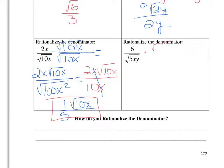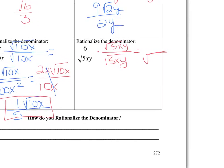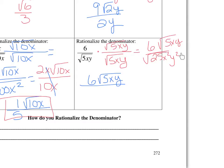We're going to multiply the numerator and the denominator by the square root of 5xy. That gives us the square root of 25x squared y squared in the denominator and 6 square root of 5xy in the numerator. Now I simplify: the numerator is 6 square root of 5xy, and the denominator — the square root of 25x squared y squared — is 5xy. There's nothing to reduce because 6 doesn't reduce with any part of 5xy.